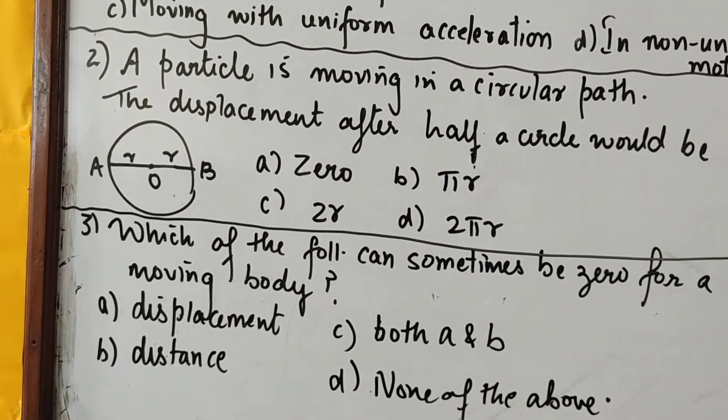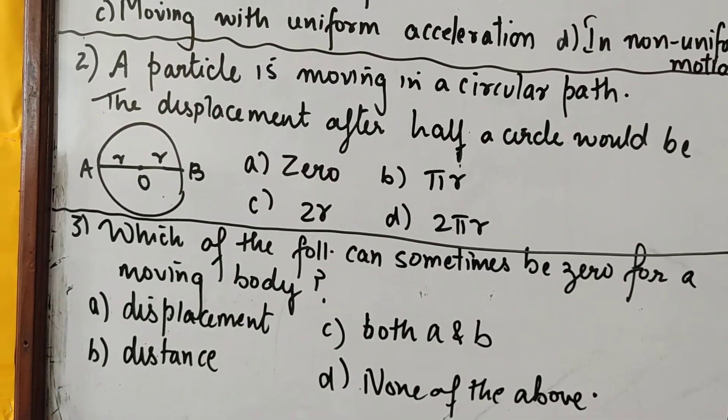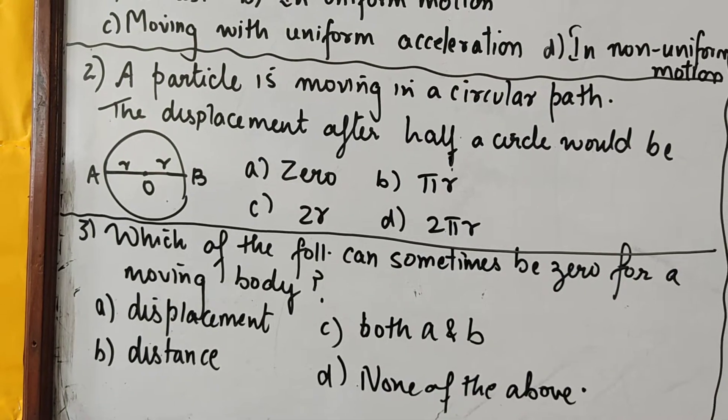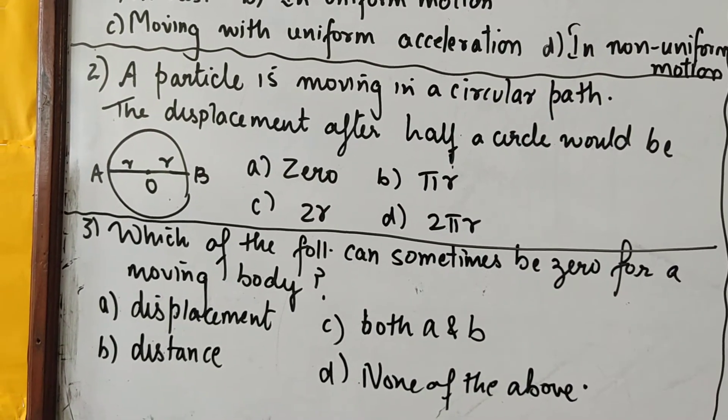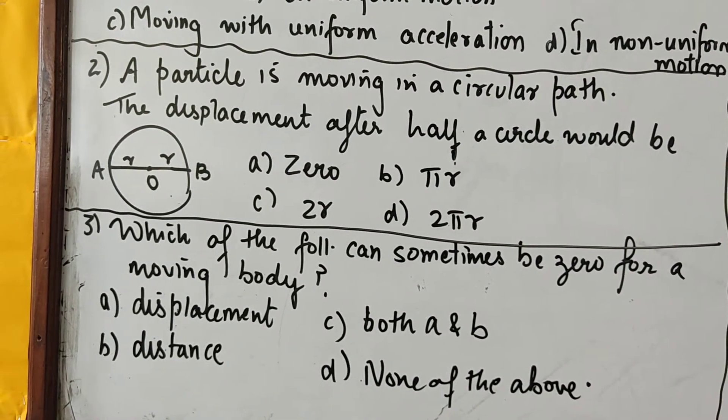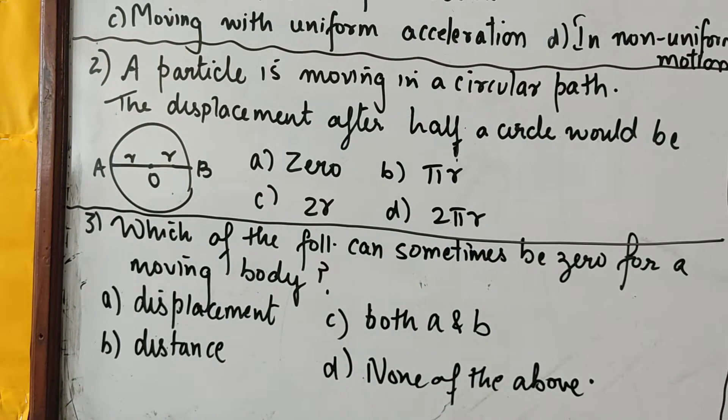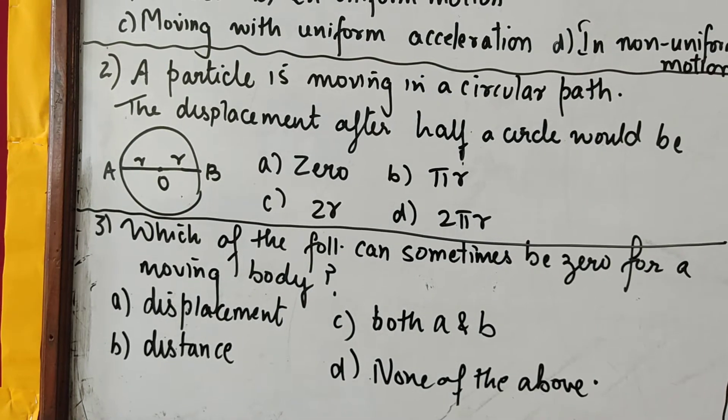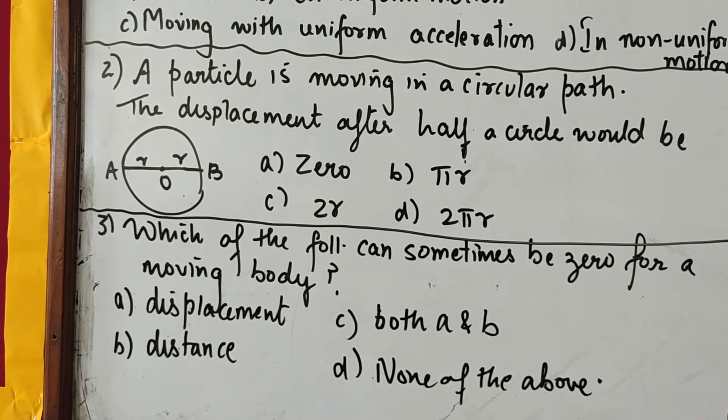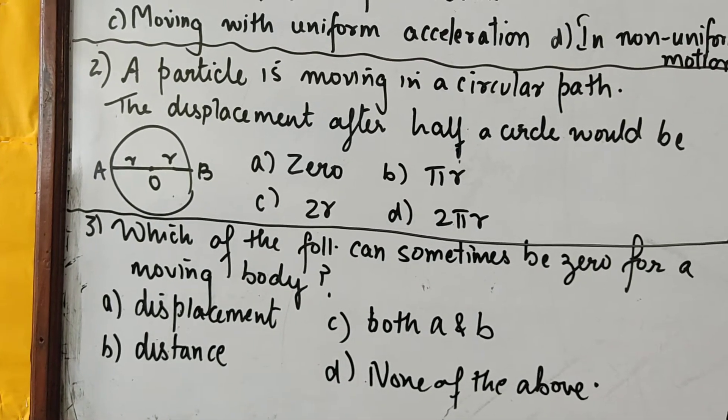Next third is: which of the following can sometimes be 0 for a moving body? Which of the following can sometimes be 0 for a moving body? There are four options given: displacement, distance, both A and B, that is both displacement and distance, none of the above.